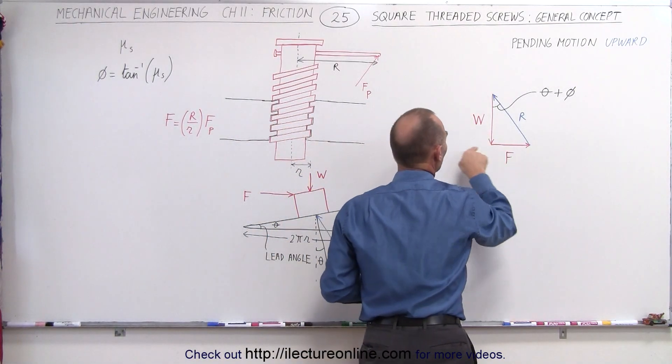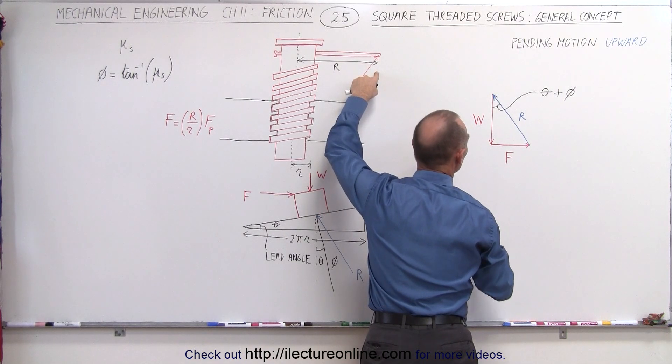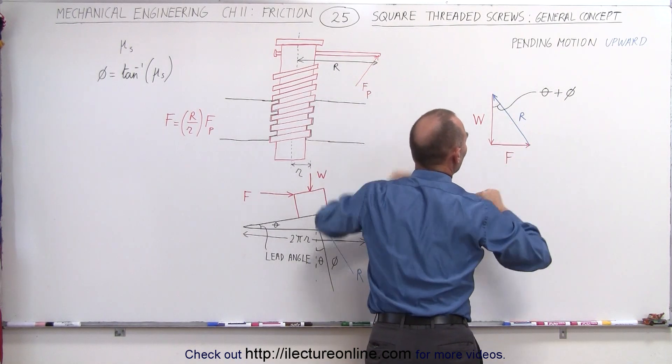So we have the weight of the screw, the force applied due to the moment of the force here, due to the moment applied to the screw, and then we have the reactionary force of the thread.